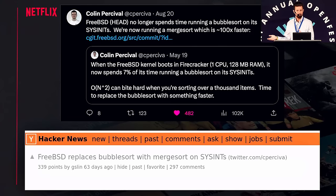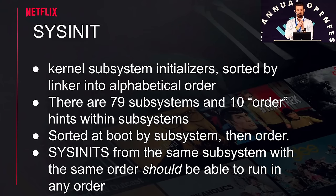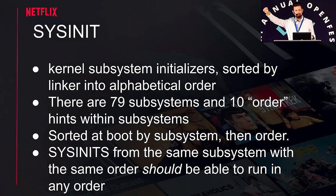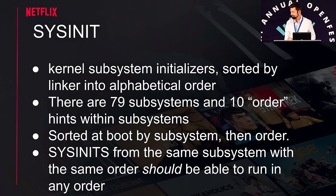To explain what sysinit is: every kernel subsystem needs to initialize itself at boot, and that's done using the sysinit macro. The linker, when building the kernel, sorts every system into an alphabetically ordered list. But you don't want alphabetical order — you want the order in which subsystems need to be initialized. There are 79 subsystems, and within each there are roughly eight different ordering levels: I want to go first, I want to go second, I don't care, and so on. They're sorted at boot first by subsystem, then the ordering hints within those subsystems are applied. The key is that sysinits with the same subsystem and same ordering hint — i.e., ties — should be able to run in any order.